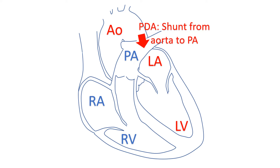In PDA, blood flows from the aorta at systemic pressure to the pulmonary artery, which has a much lower pressure after birth.